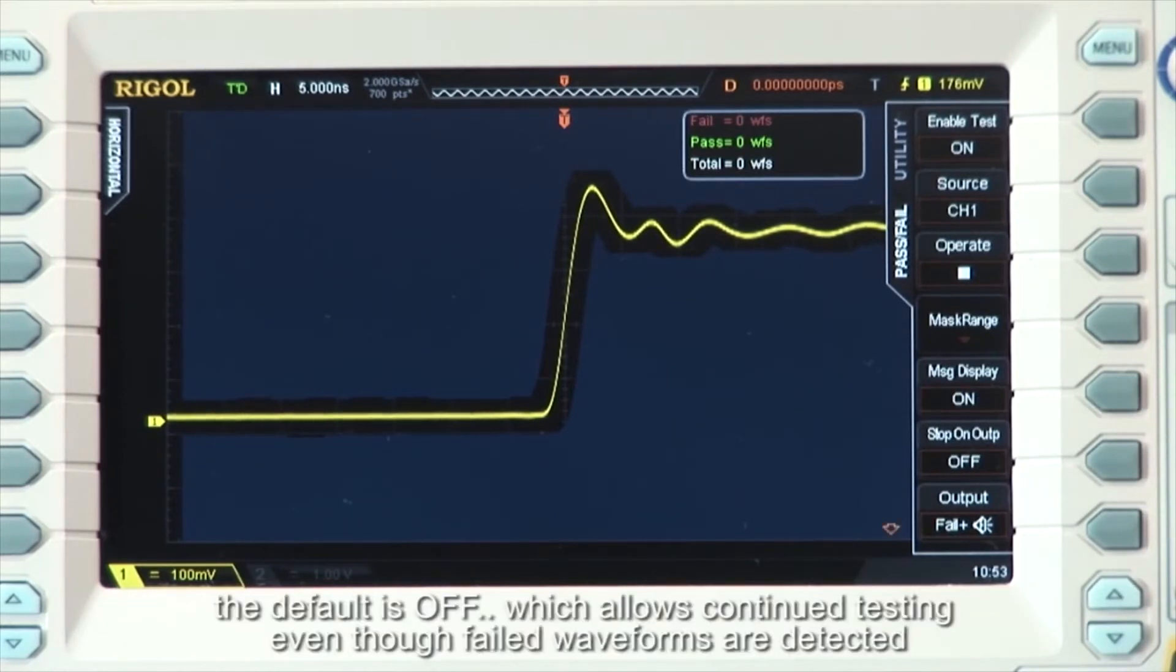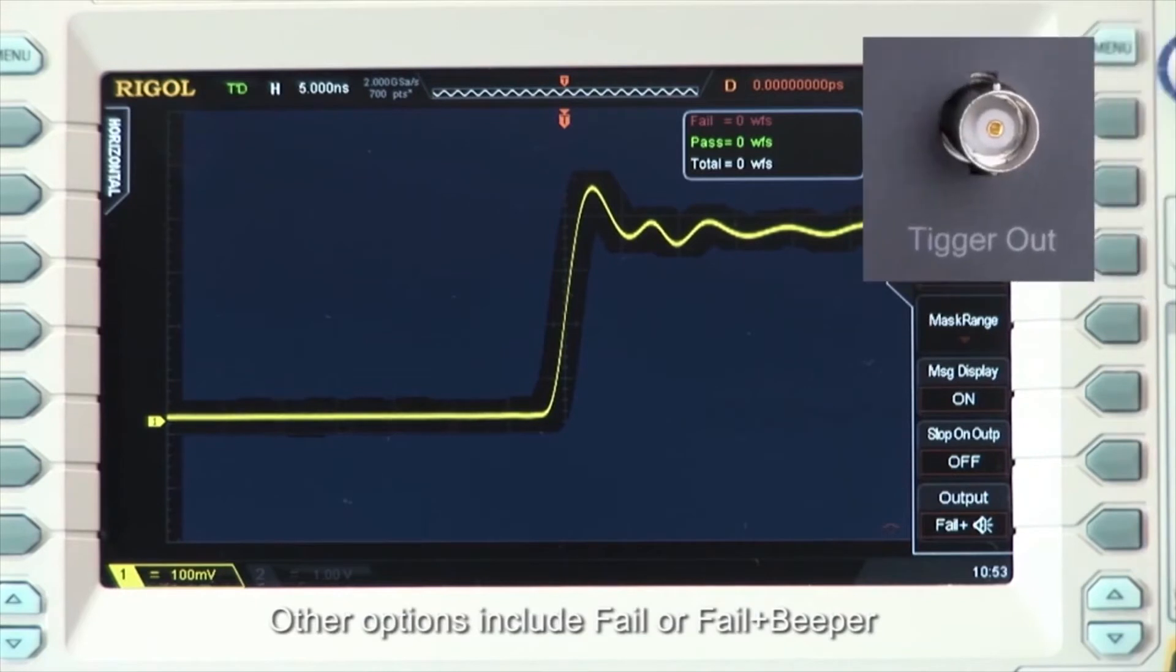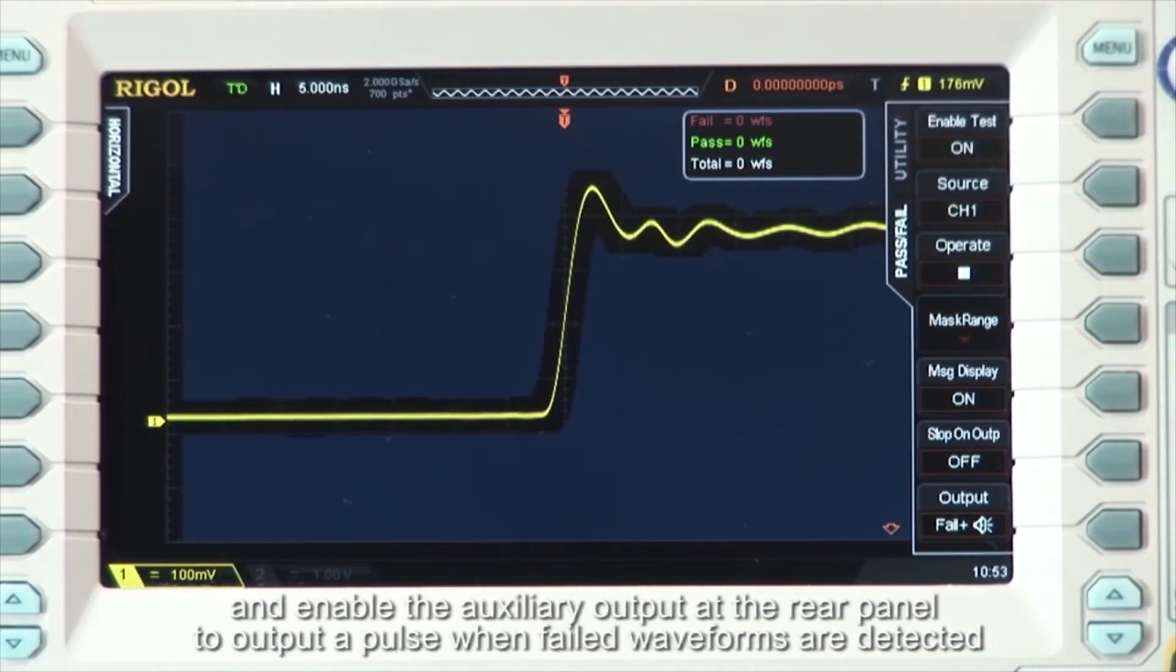The default is off, which allows you to continue testing even when failed waveforms are detected. Other options include fail or fail plus beeper, and enable the auxiliary outputs on the rear panel to output a pulse when failed waveforms are detected.